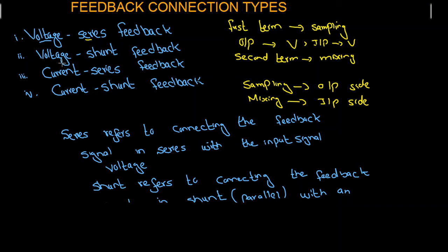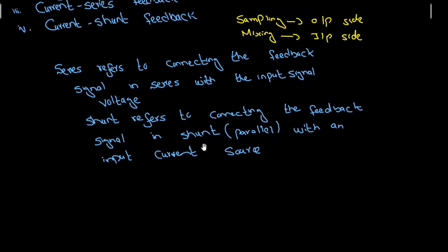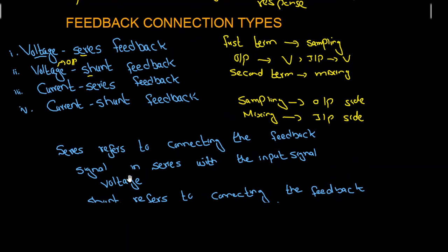For voltage-shunt feedback: the first term 'voltage' indicates sampling at the output side, so the output signal is voltage. The second term 'shunt' indicates mixing at the input side, meaning the input signal is going to be current — the feedback network is in parallel with the input signal. So output is voltage and input is current for voltage-shunt feedback.